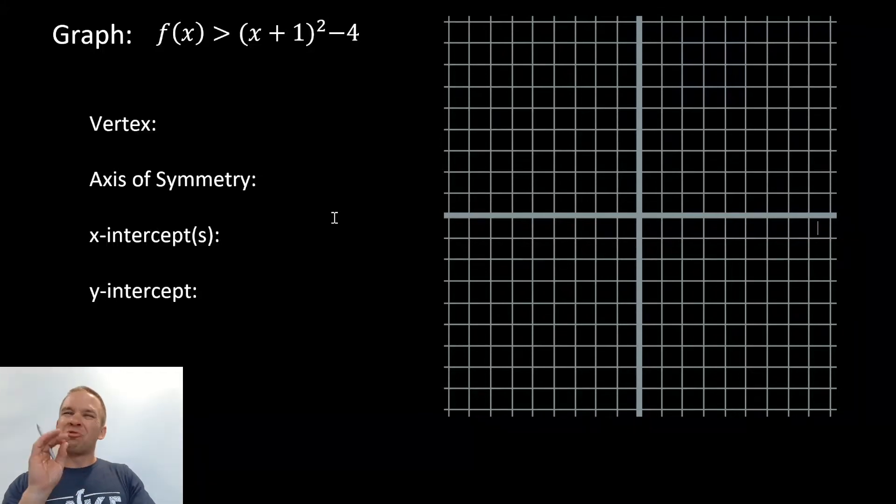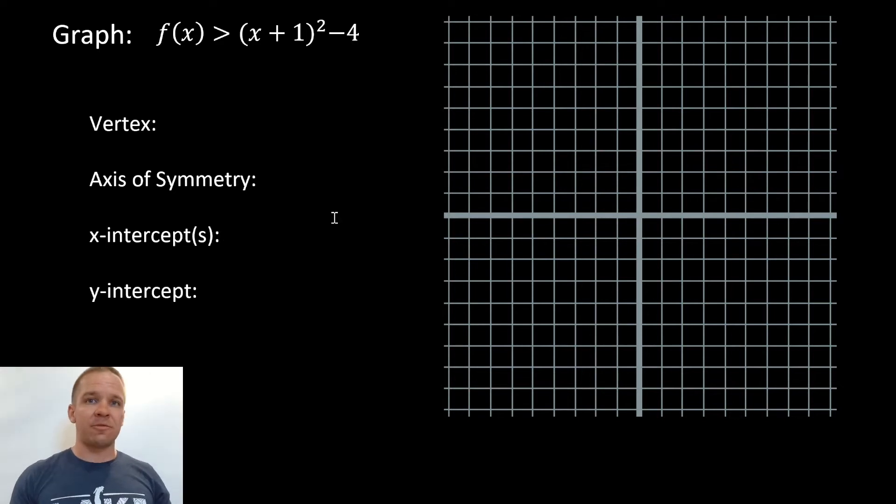What's happening, dogs? Mr. Allen here, and we're about to graph this quadratic inequality that's currently in vertex form. Ooh, big money! I love when I get that vertex for free, basically.